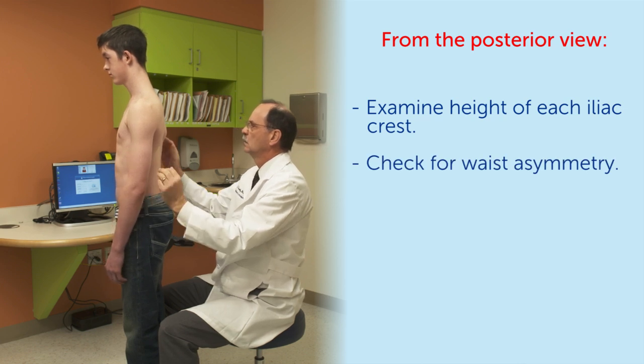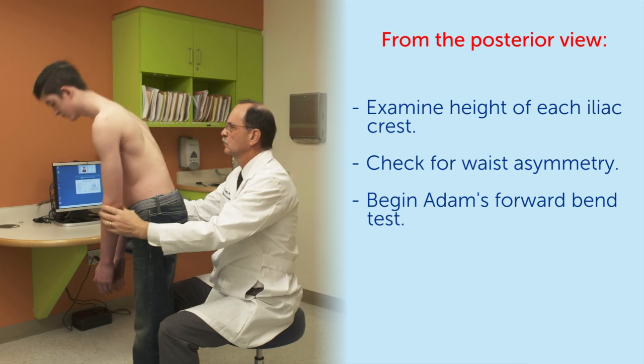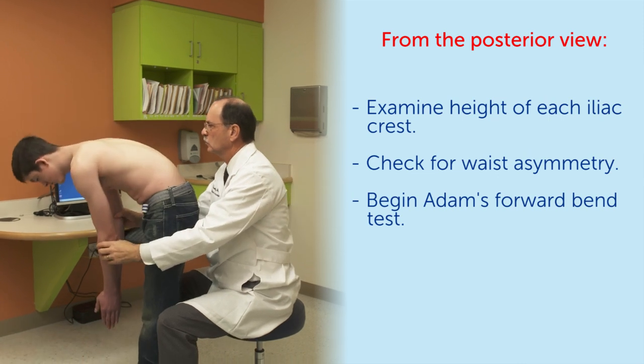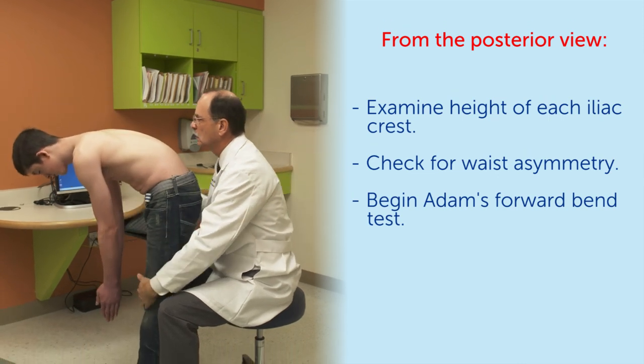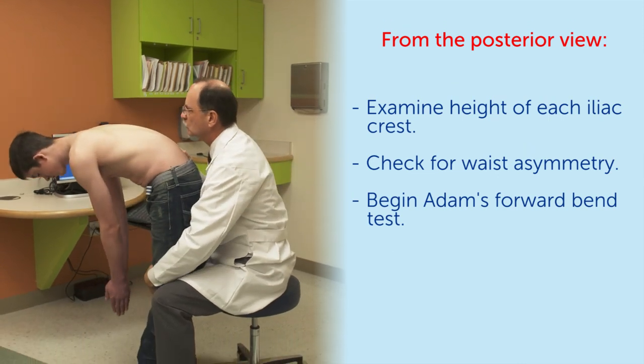Then ask the patient to bend forward with the palms opposed to reach for his toes. Make sure the patient keeps the knees in full extension, as hamstring tightness in this age group will cause the knees to flex and distort the spine examination.